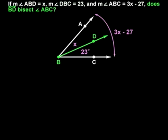Remember that ray BD bisects angle ABC if the measure of angle ABD equals the measure of angle DBC. So let's first set up an equation to find the value of x so that we can determine if the measure of angle ABD equals the measure of angle DBC.